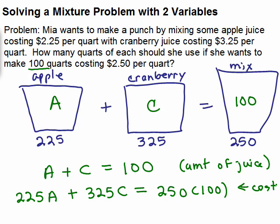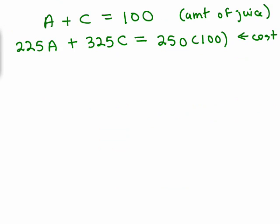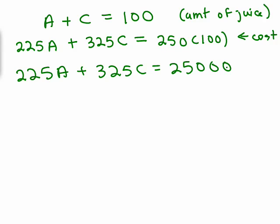So we have two equations with two unknowns. Now we have to simplify and use one of our methods for solving a system of equations. The top equation is A plus C equals 100. The bottom equation, simplifying 250 times 100 on the right, gives 225A plus 325C equals 25,000. I'll solve the first equation for A by subtracting C from both sides, giving A equals 100 minus C, and use substitution.